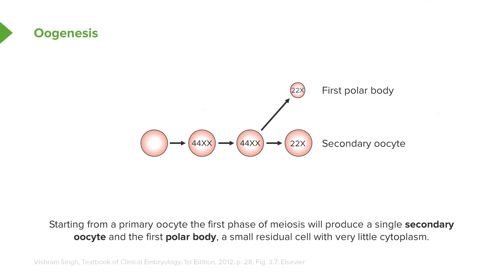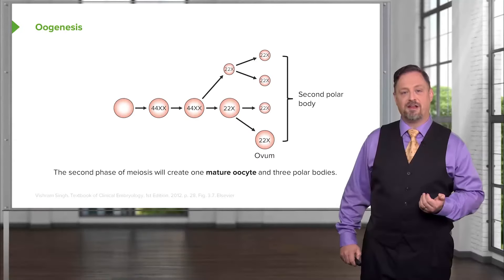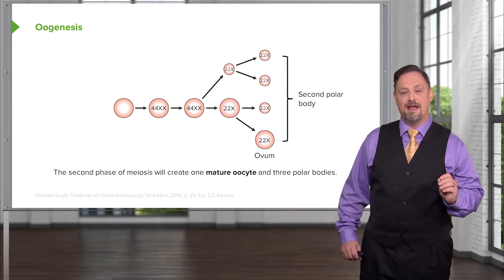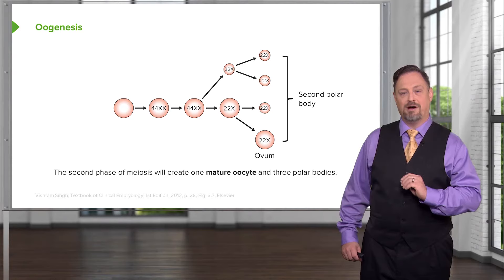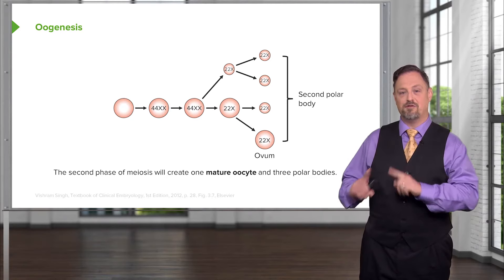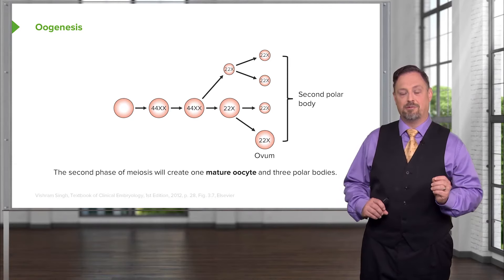As the first round of meiosis proceeds, we're going to produce a secondary oocyte and a polar body. So one primary oocyte will produce one secondary oocyte and a very small residual polar body, which is not going to be useful in further mammalian reproduction. The second round of meiosis when completed will produce a mature ovum and another set of polar bodies. The first polar body will produce two, and the secondary oocyte will produce one polar body and the ovum.